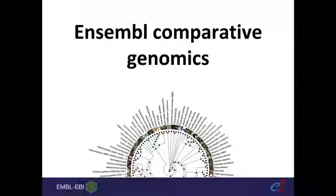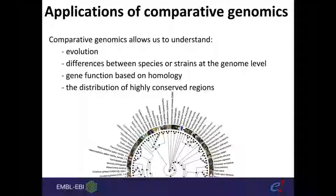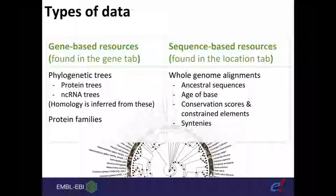Comparative genomics allows us to understand evolution, differences between species or strains at the genome level, gene function based on homology, and distribution of highly conserved regions. In Ensembl we broadly split these into gene-based and sequence-based resources. Gene-based resources focus on phylogenetic trees — aligning gene translations for protein trees to determine orthologs and paralogs. Sequence-based resources focus on larger-scale whole-genome alignments, helping us understand ancestral sequences, the age of bases, and synteny information.